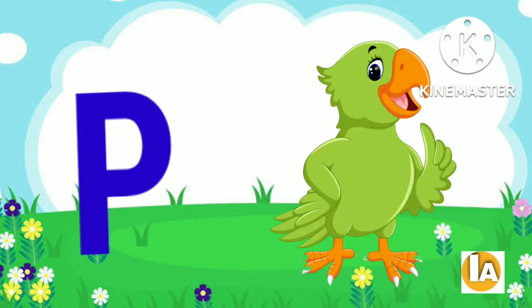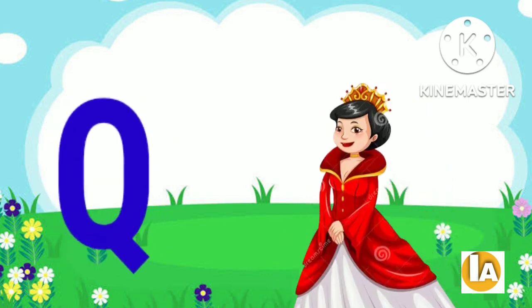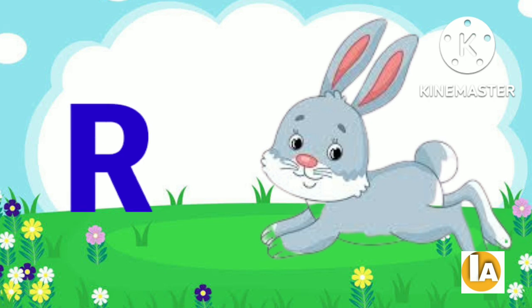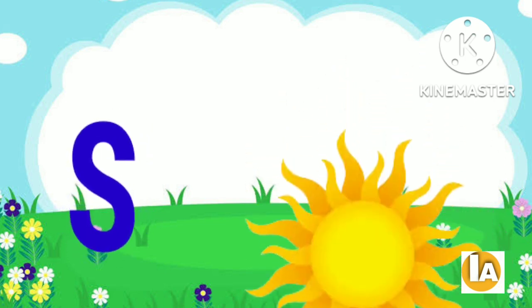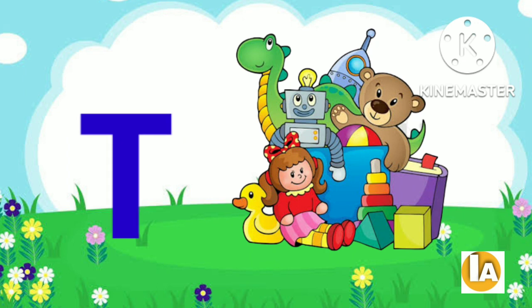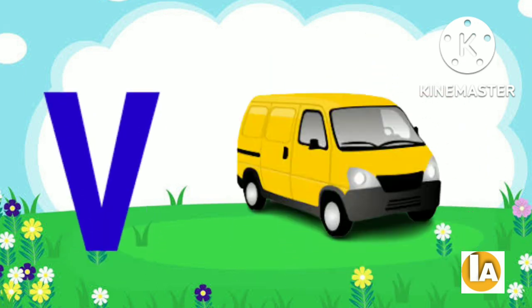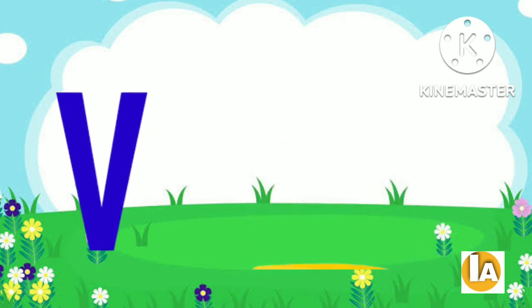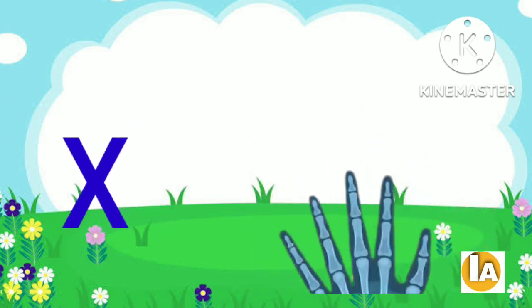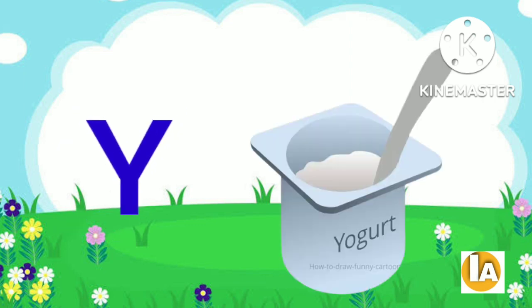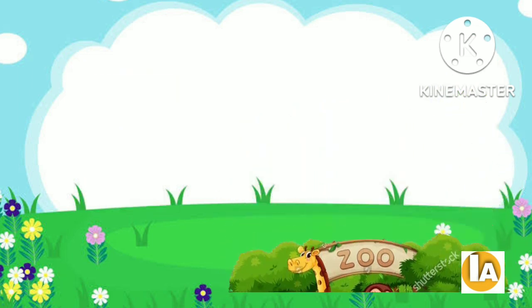P for Parrot, Q for Queen, R for Rabbit, S for Sun, T for Toys, U for Umbrella, V for Van, W for Water, X for X-Ray, Y for Yoga, Z for Zoo.